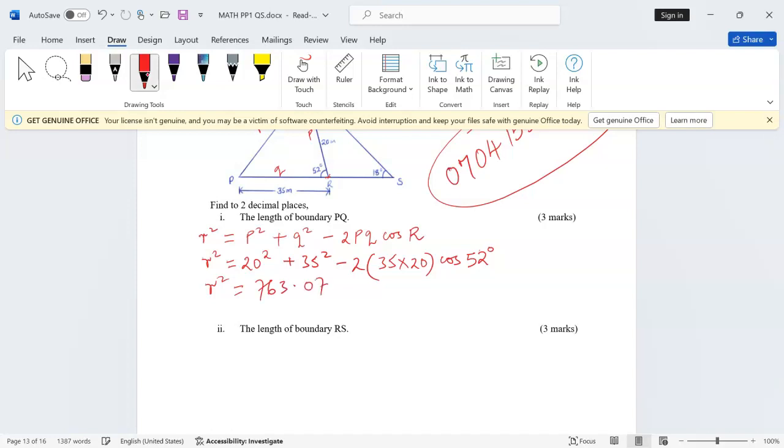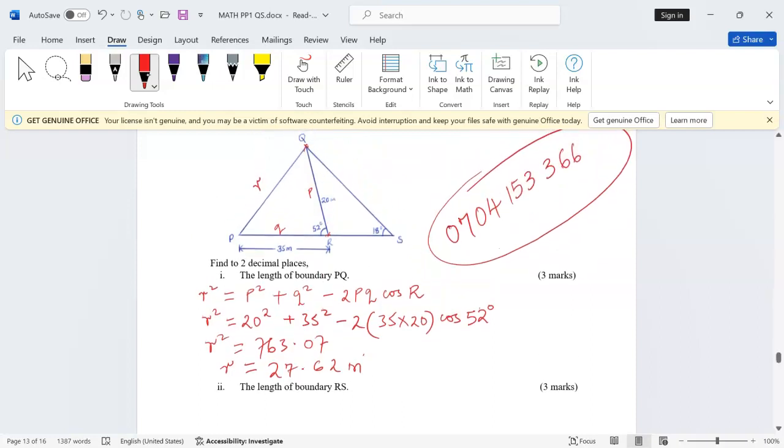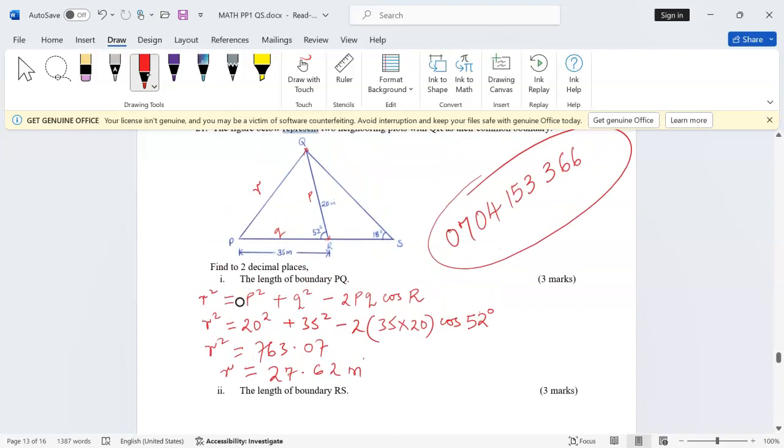Then the value of r will be 27.62 according to the exam instructions, must be in two decimal places. The other question is the length of the boundary RS. We are now going to use another triangle. When we are talking about RS, we are now on triangle QRS.